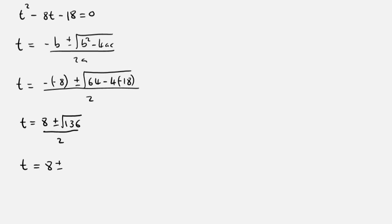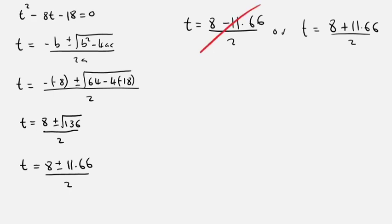So 8 plus or minus, square root of that is 11.66. So t is either 8 minus 11.66 or t is 8 plus 11.66. This won't make sense because time will be negative and time can't be negative, so let's just focus on the second. So t is 9.83.